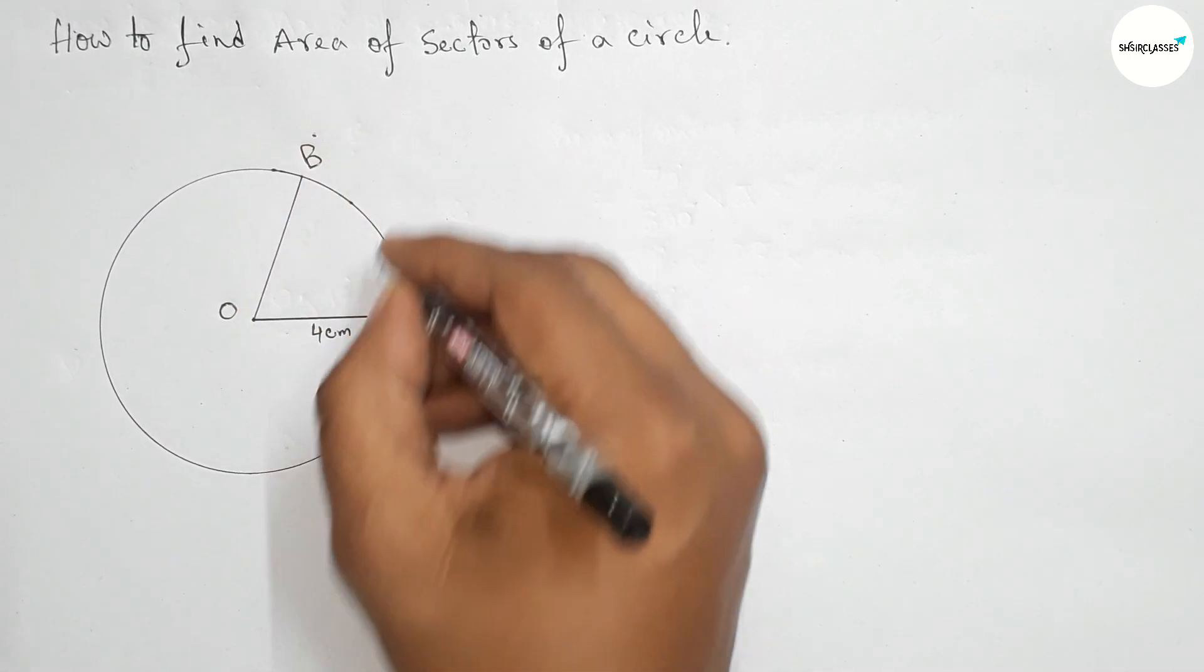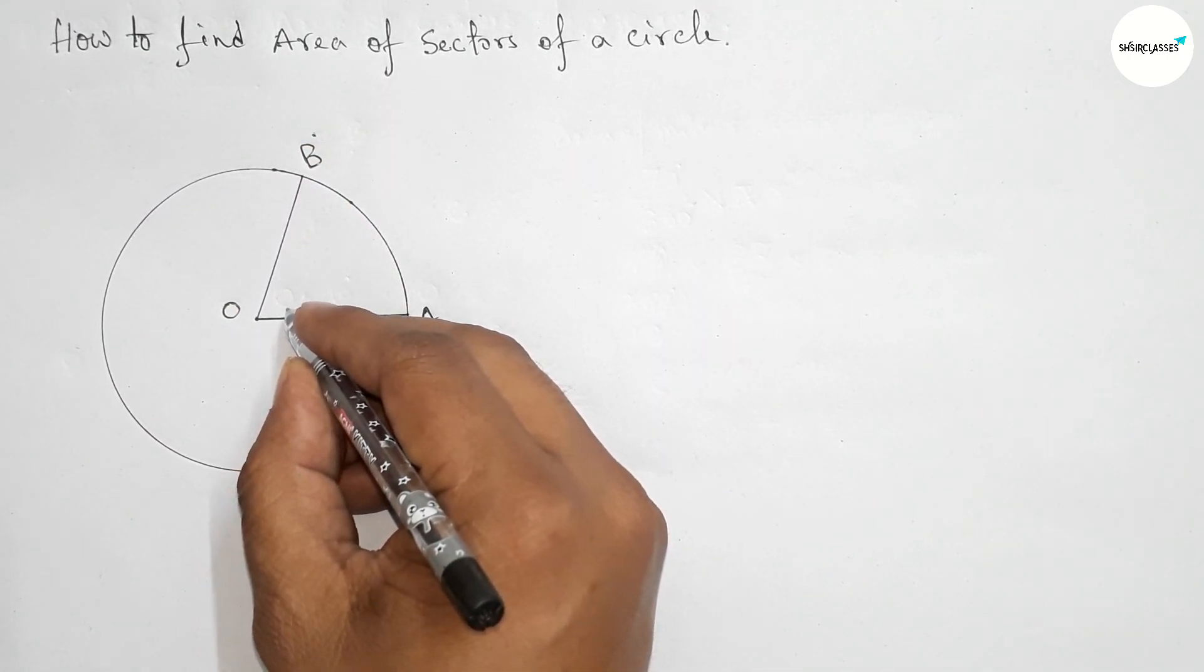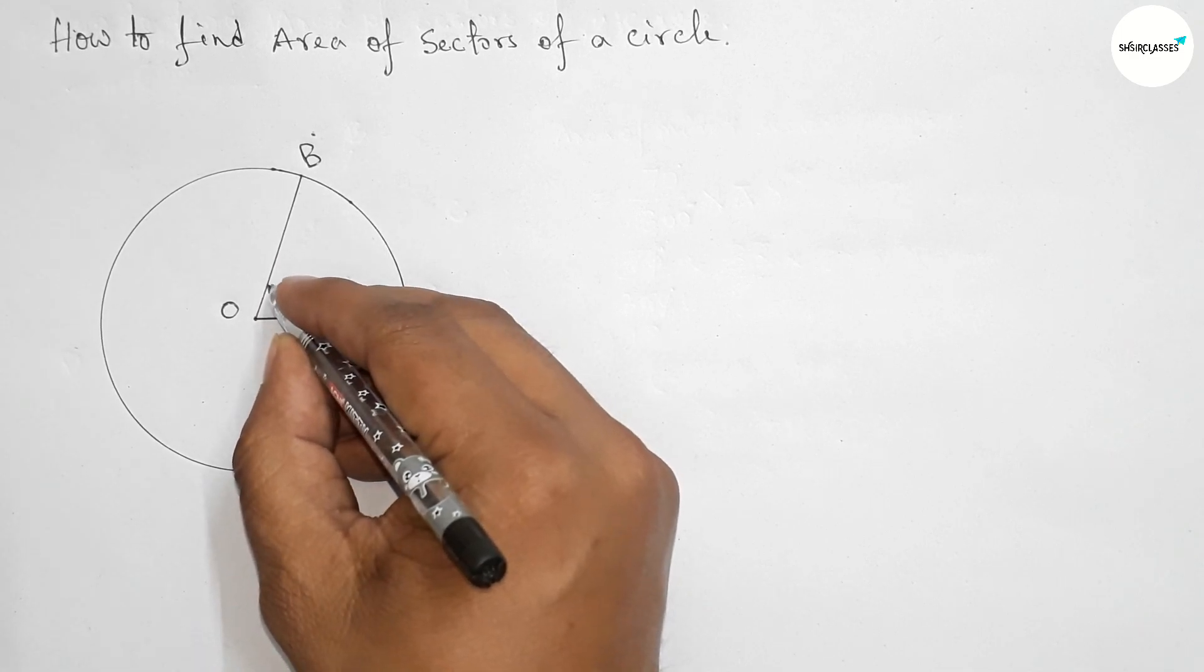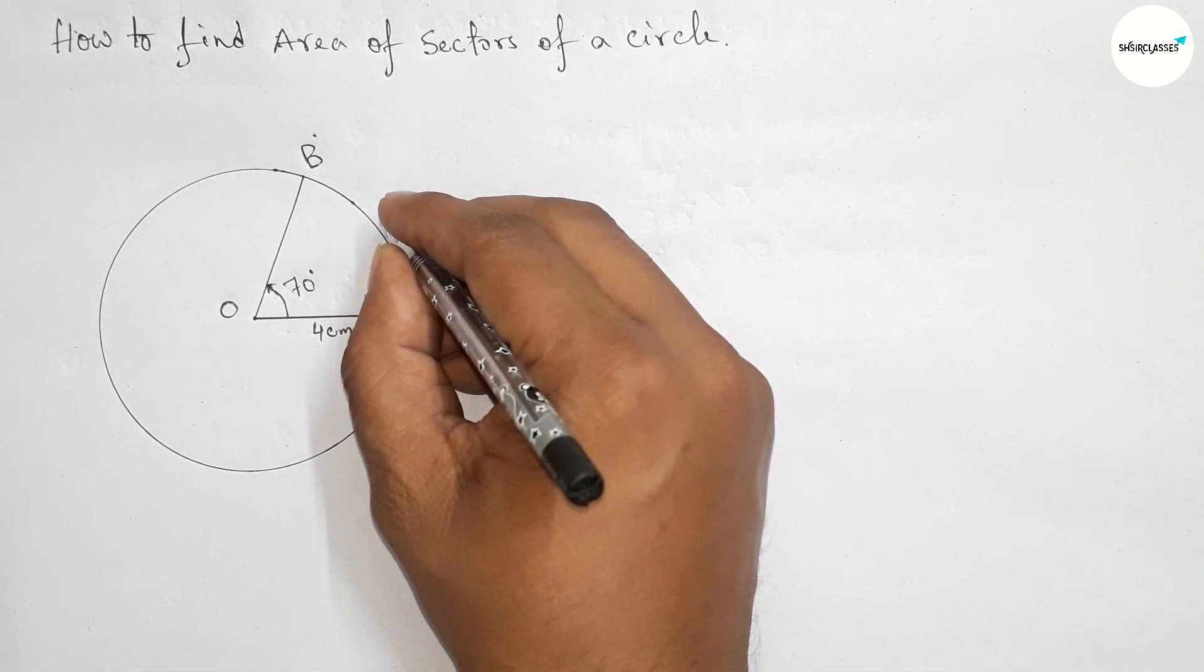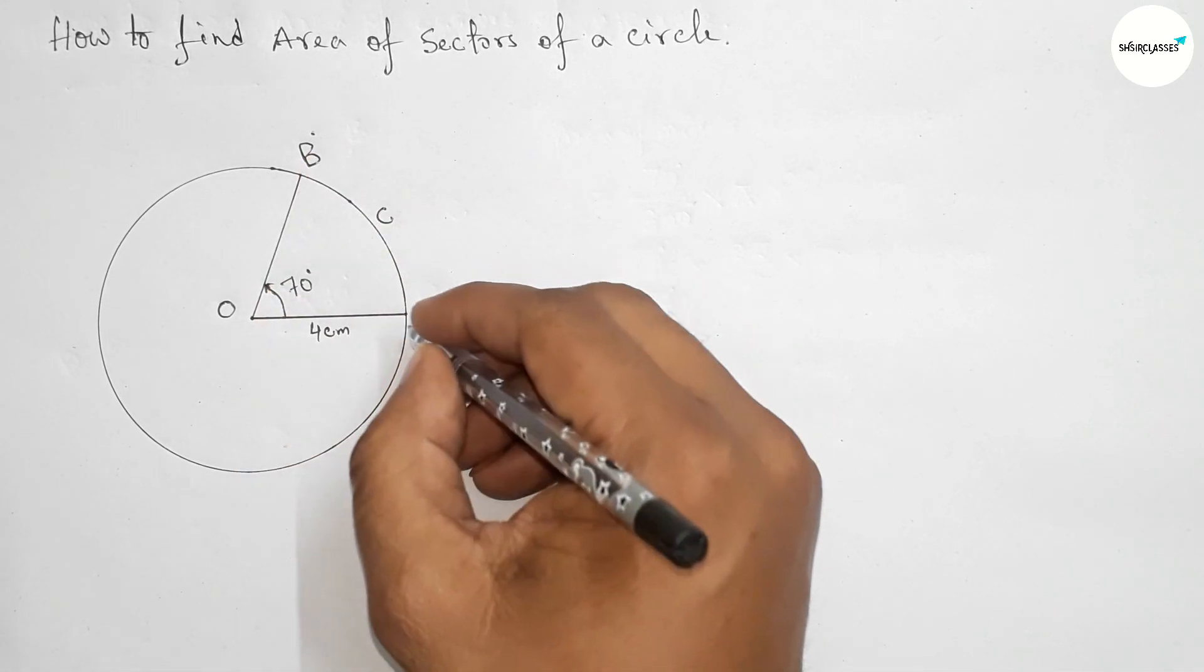Next, take point B. So angle AOB, this is 70 degrees. And take point C. So this is the minor arc and this one is the major arc of the circle.